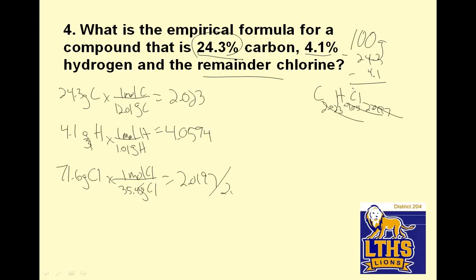So, let's divide by the smallest one. And, I get 2.02331 divided by 2.0197 and I have 1.00. 4.0594 divided by 2.0197 and I have 2.009. And then, this is going to be 1. I'm going to put that in my calculator. These are close enough to whole numbers. So, my answer is C1, H2, Cl1.